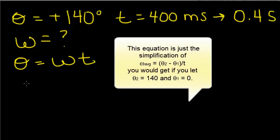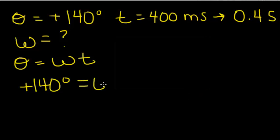We have a positive 140 degrees is equal to some angular velocity that we're trying to find times 0.4 seconds.